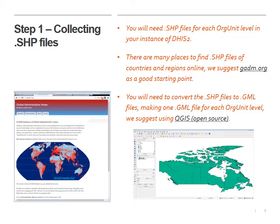Step one: collecting the shapefiles. You're going to need the shapefiles for each org unit level in your instance of DHIS2. A lot of shapefiles are available from different countries and regions. We suggest going to gadm.org — you can click on the link on this page — but you might also have shapefiles for your own areas where you work. If you don't, gadm is a great place to start. You're going to have to save all of these shapefiles as GML files.